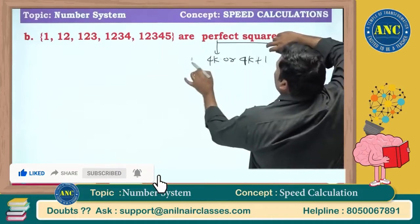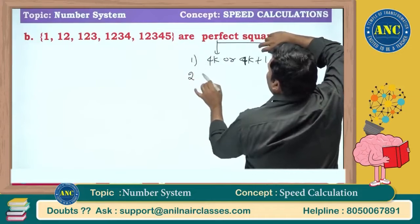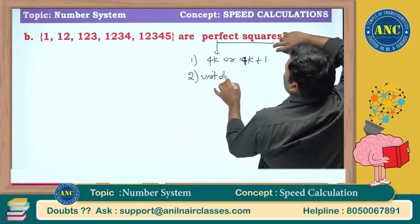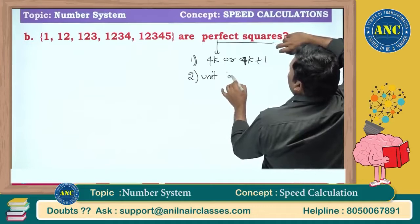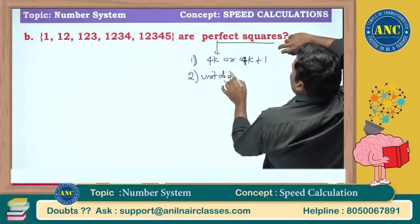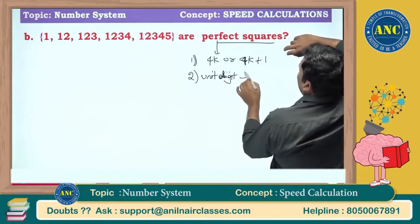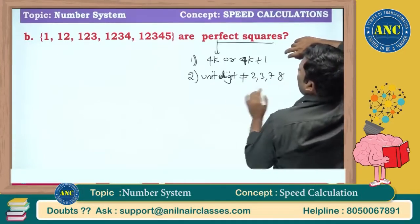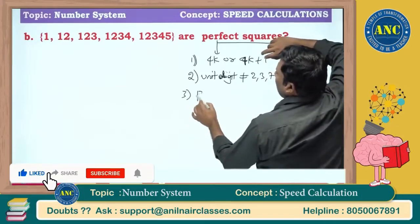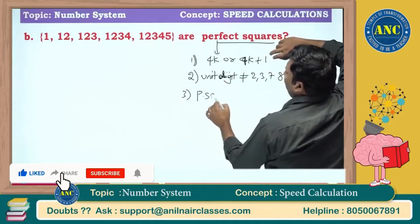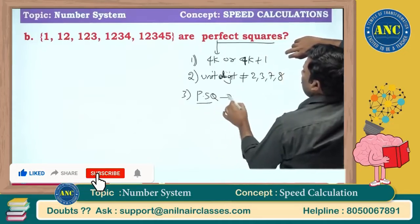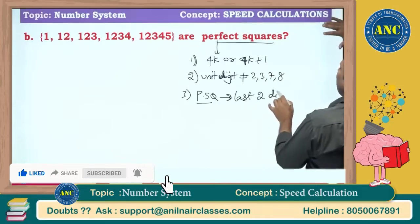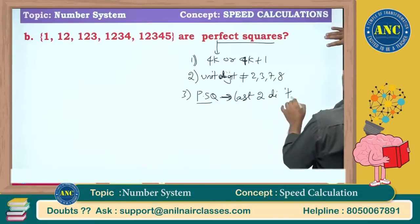What is the second property? A perfect square's unit digit can never be 2, 3, 7, or 8. Also, a perfect square's last two digits will always be 25 if it is ending with 5.